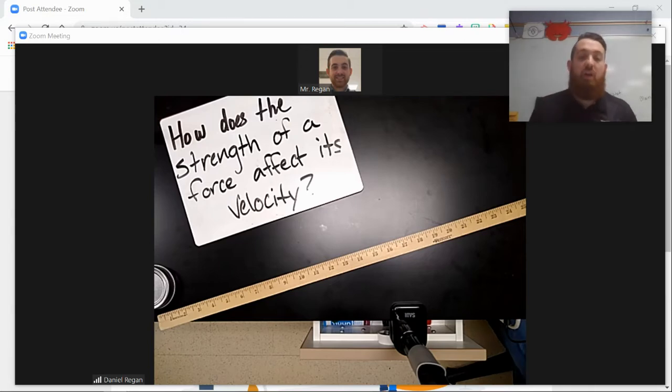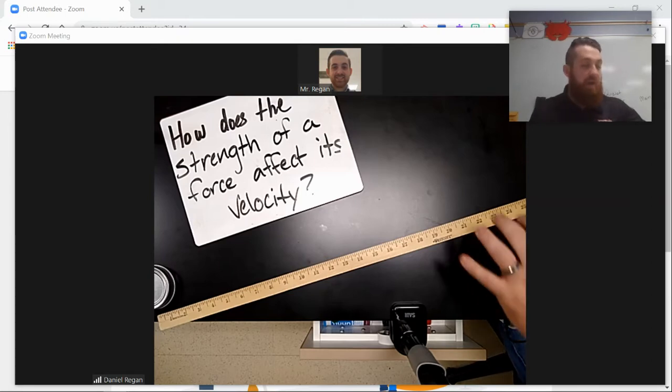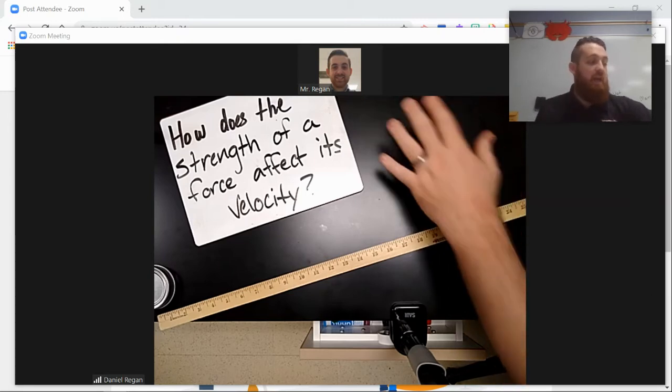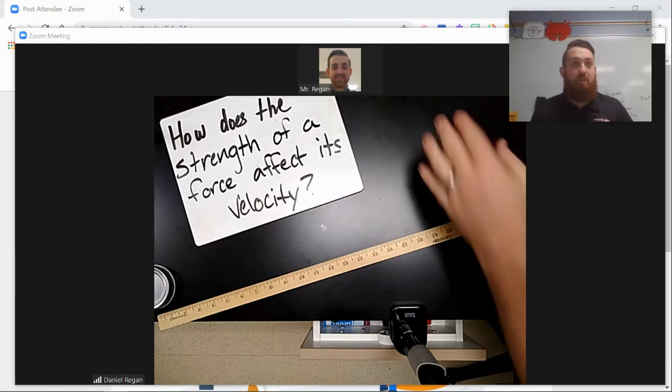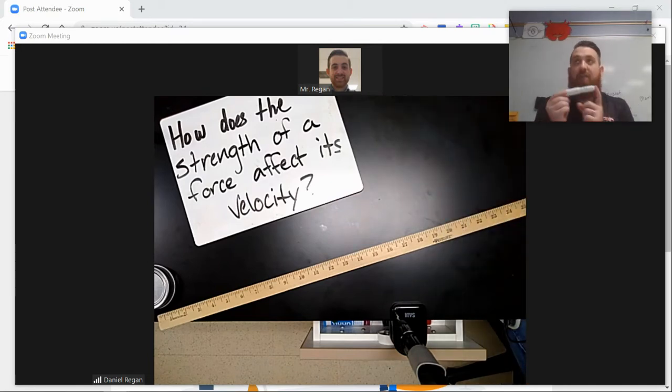And then we're going to have our control variables, the things we keep the same. So how we measure, which will be our meter stick. How smooth the table is - we're going to keep the table the same throughout the lab. And then obviously we're going to use the same spring throughout our entire test and the size of the lid as well, hopefully to get some good results.